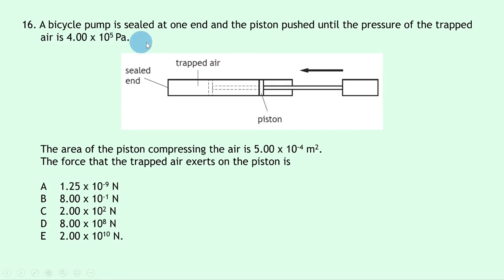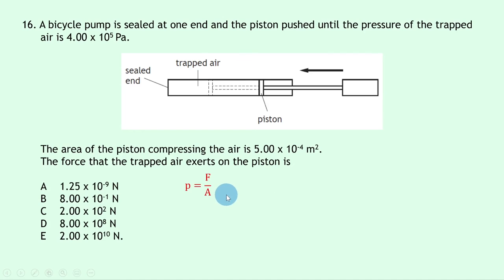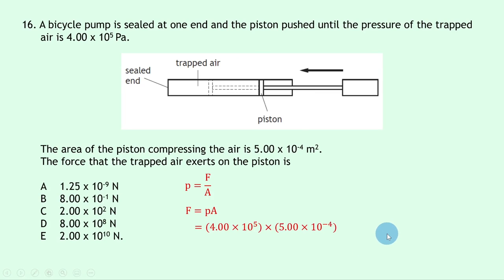Question 16: a bicycle pump is sealed and the piston pushed until pressure is 4.00 × 10⁵ Pa. The piston area is 5.00 × 10⁻⁴ m². Using P = F/A rearranged to F = PA: F = 4.00 × 10⁵ × 5.00 × 10⁻⁴ = 200 newtons, or 2.00 × 10² N. The answer is C.